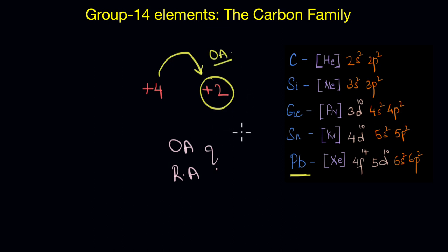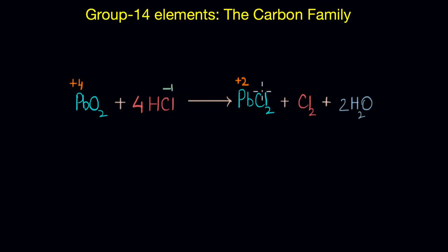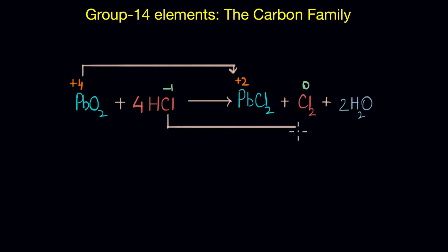Let's understand this better with an example. Here we have lead dioxide (PbO₂) reacting with hydrochloric acid to form lead chloride (PbCl₂), Cl₂, and water. In this reaction, the oxidation state of lead changes from plus 4 to plus 2, and chlorine changes from minus 1 to 0. So lead undergoes reduction and in the process oxidizes chlorine. The driving force for this reaction is lead moving from the less stable plus 4 to the most stable plus 2 oxidation state — and on doing so, lead in plus 4 acts as an oxidizing agent.